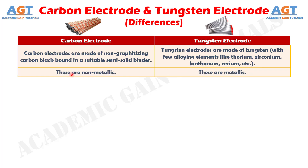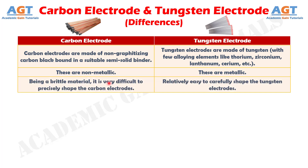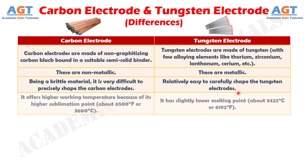No. 2: Carbon electrodes are non-metallic, whereas tungsten electrodes are metallic. No. 3: Being a brittle material, it is very difficult to precisely shape the carbon electrodes, whereas it is relatively easy to carefully shape the tungsten electrodes.